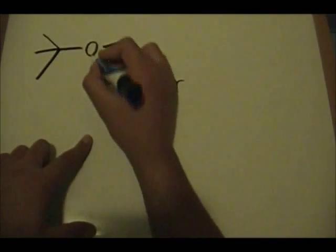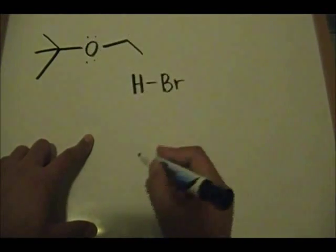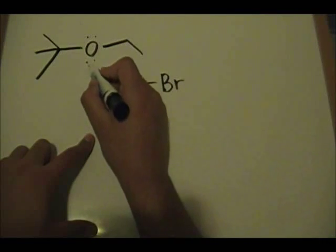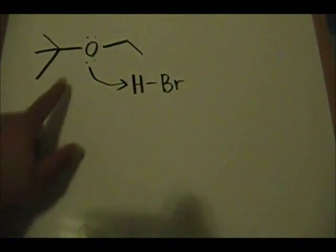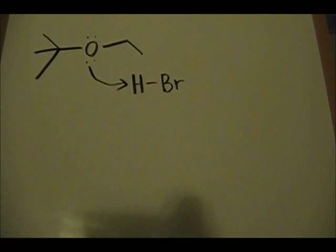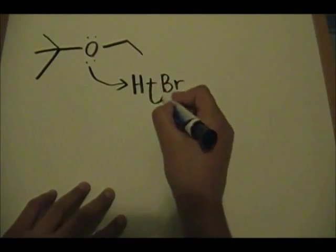Pretty similar to the first reaction mechanism I showed you, you're going to form a bond between this oxygen and this hydrogen. So you have the arrow coming at the hydrogen and the lone pairs are what you use to form the bond. So now you kick off this pair of electrons to the bromine.